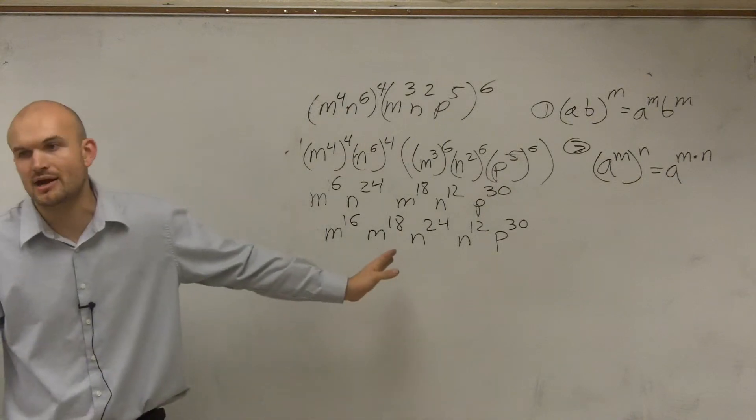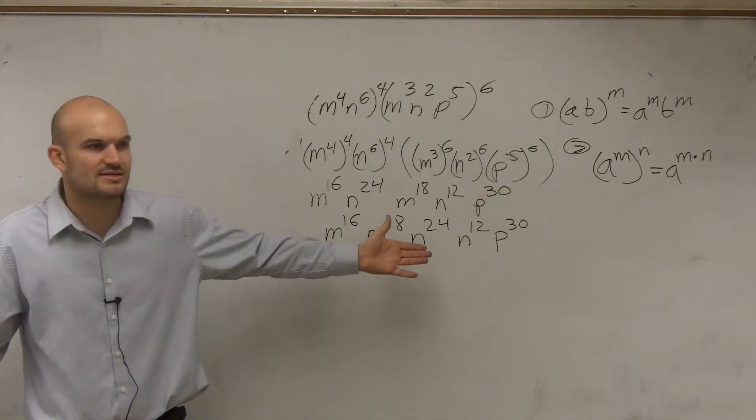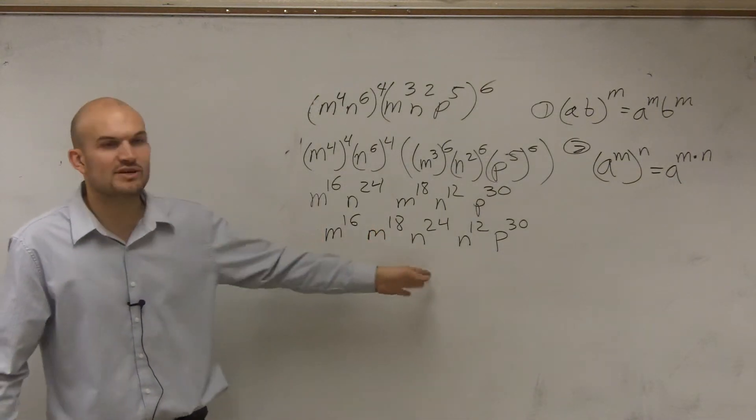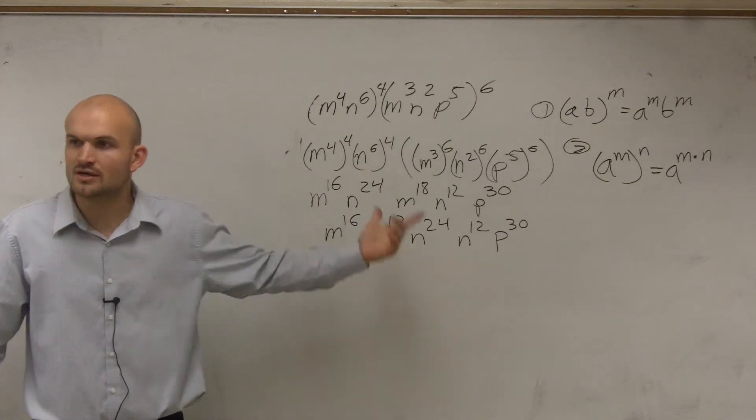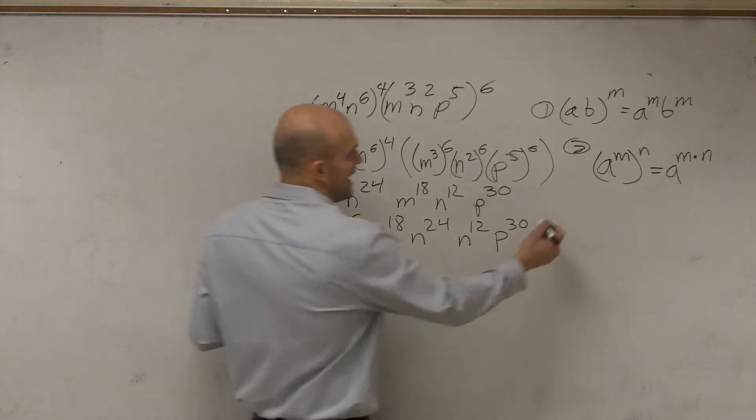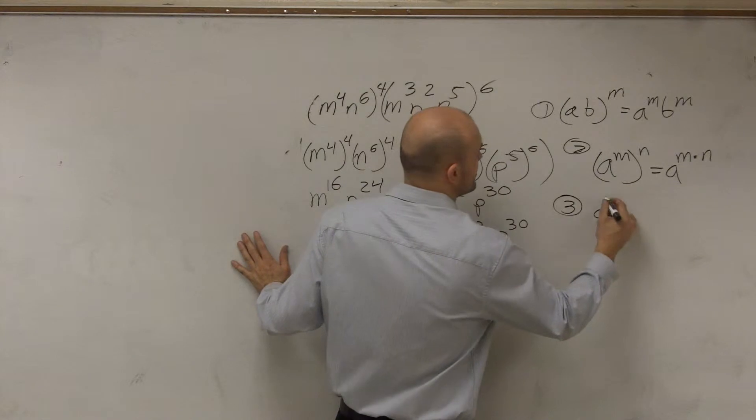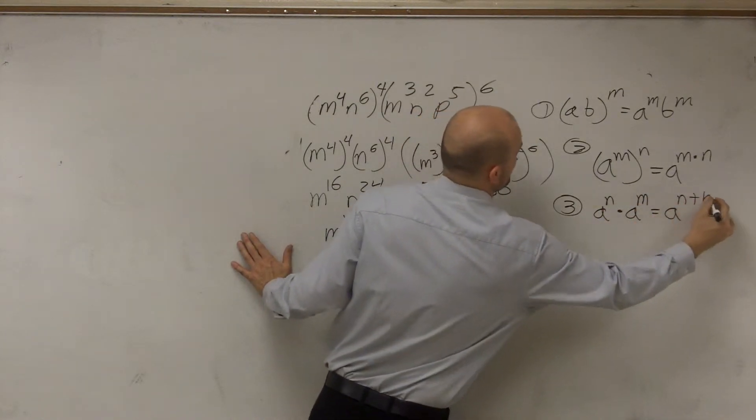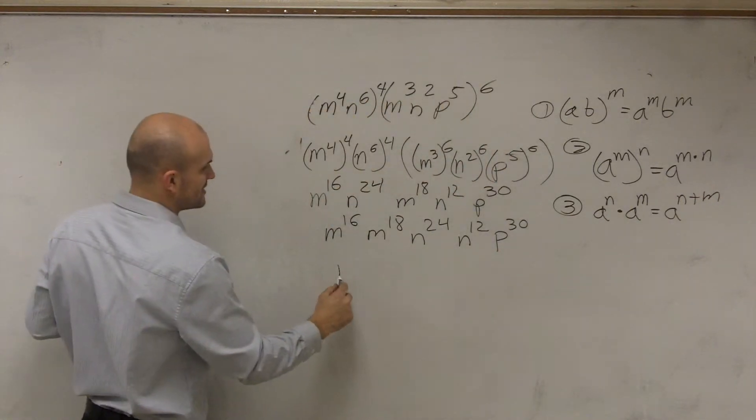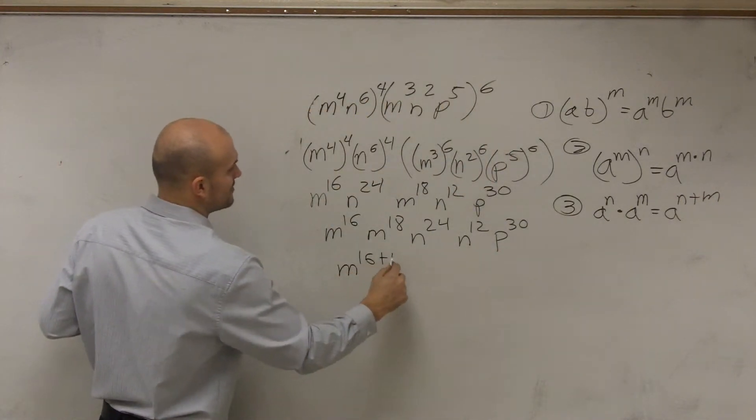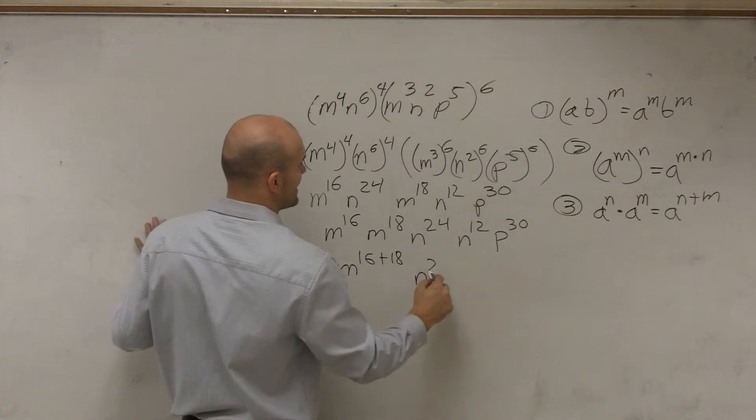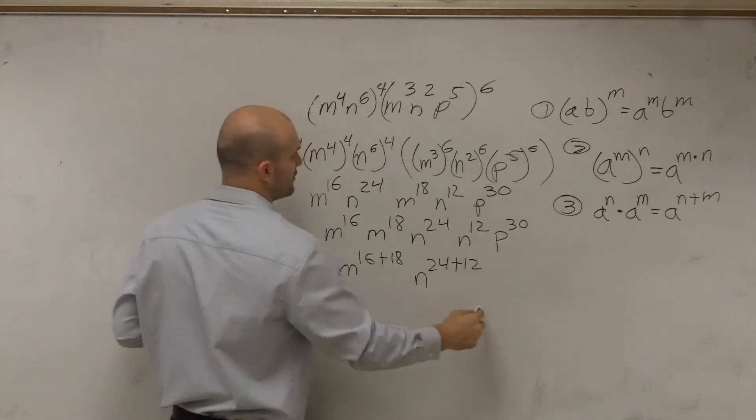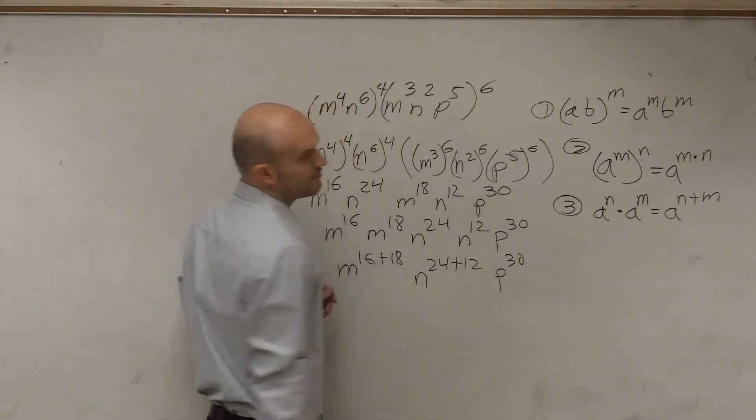Since it's all multiplication, guys, it doesn't matter how I write it, right? 2 times 3 is the same as 3 times 2. So I just rewrote them with my terms next to each other. So therefore, I notice that my last property states that a to the m times a to the n equals a to the n plus m. So therefore, this is m to the 16 plus 18, n to the 24 plus 12, and p to the 30th power.